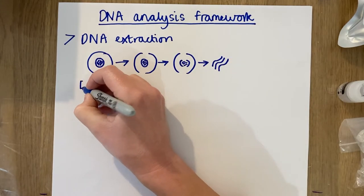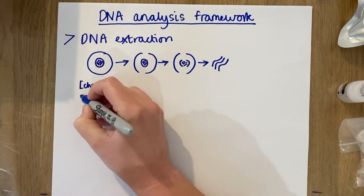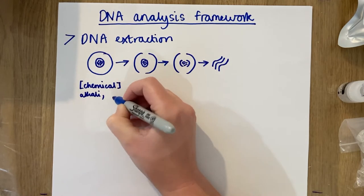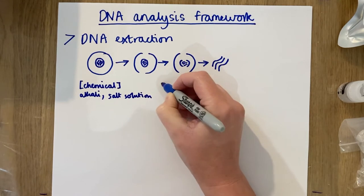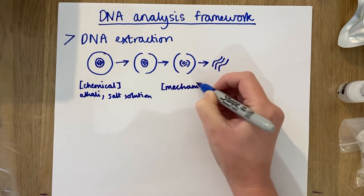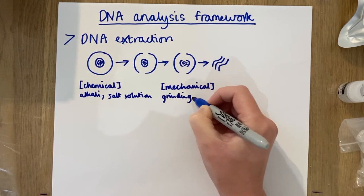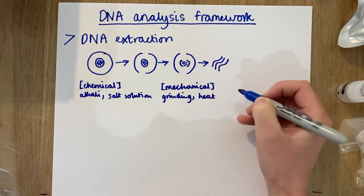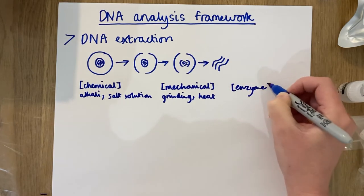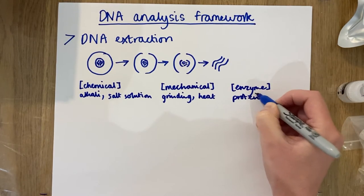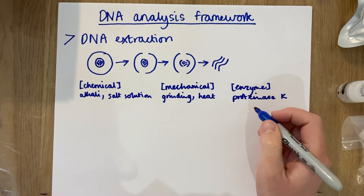Depending on the tissue type there are different ways of extracting DNA. You can use chemicals — for example an alkali or a salt solution. You can do it mechanically by grinding up your sample using a pestle and mortar, or by heating it, or you can use an enzyme. A popular one is Proteinase K. A lot of kits use multiple steps to get the DNA out.